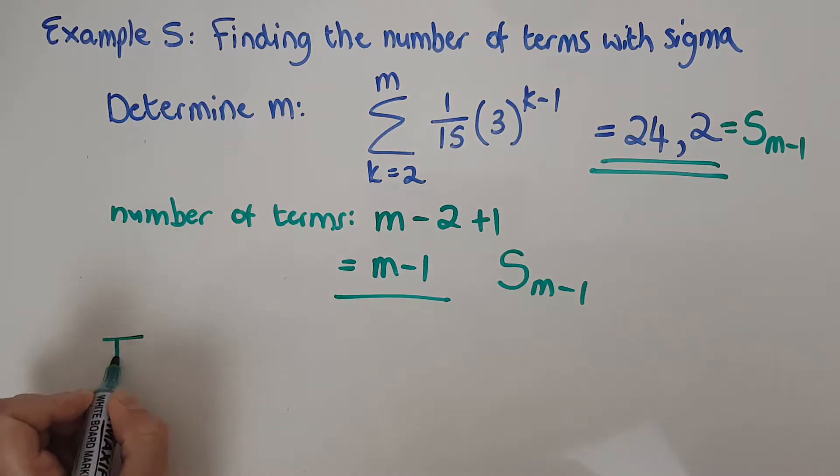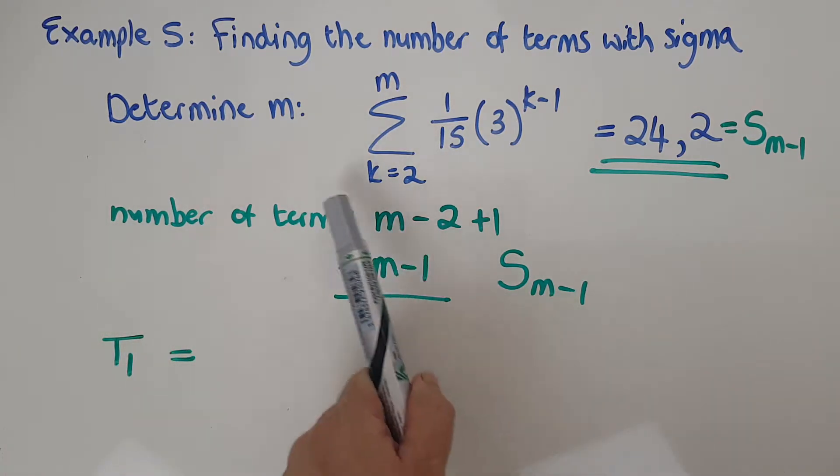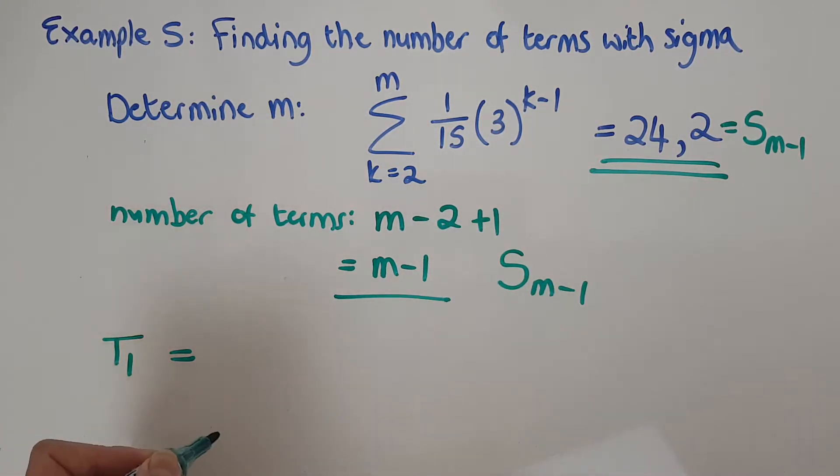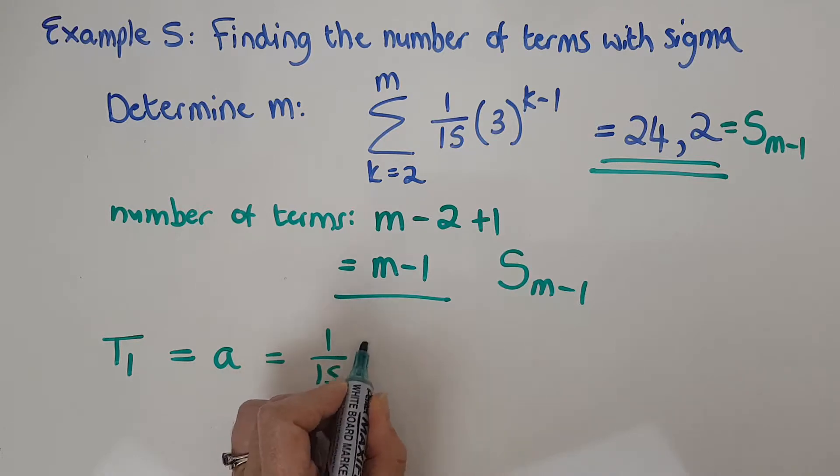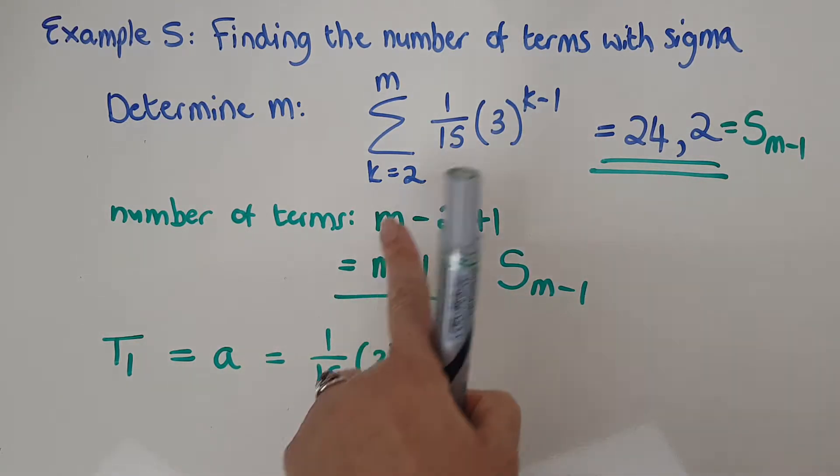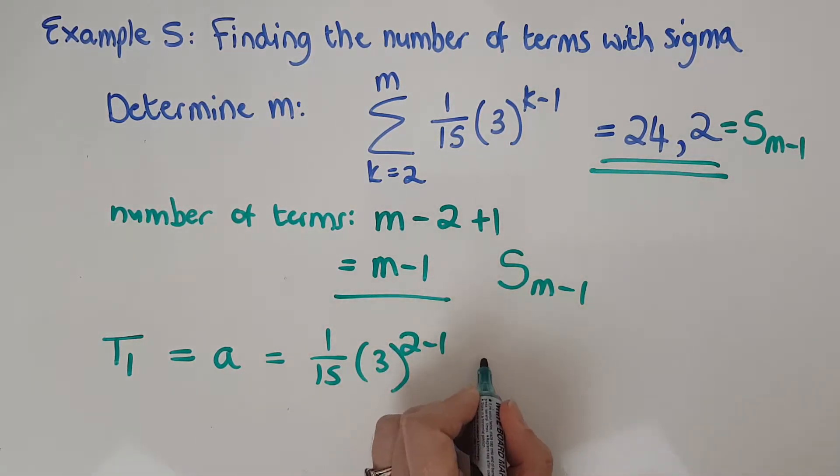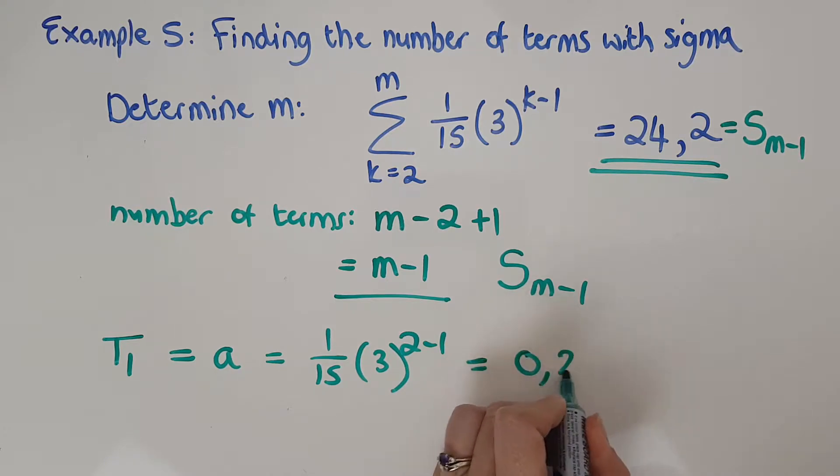So I'm going to get t1. That's going to be when k is 2, which is obviously a. So it's going to be 1 over 15 and it's going to be 3 to the power of the first one, which is 2 minus 1. That I can really just plug and play into calculator and I'm going to get out 0 comma 2.